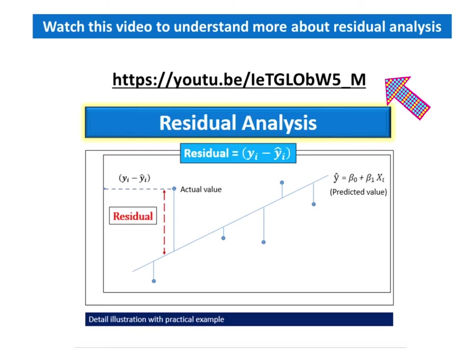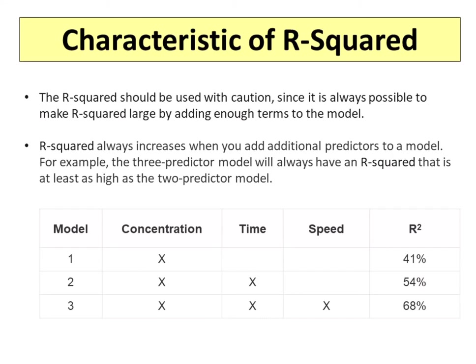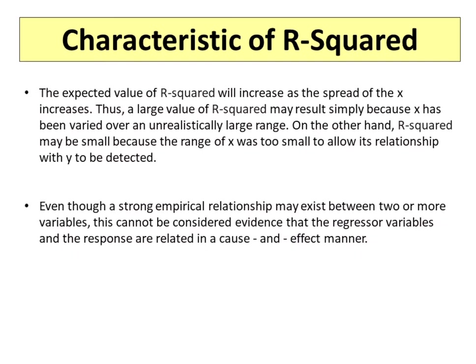Watch my other video to understand more about residual analysis. R-squared should be used with caution, since it is always possible to make R-squared large by adding enough terms to the model. R-squared always increases when you add additional predictors to a model. For example, a three-predictor model will always have an R-squared at least as high as the two-predictor model. The expected value of R-squared will increase as the spread of X increases. A large value of R-squared may result simply because X has been varied over an unrealistically large range. On the other hand, R-squared may be small because the range of X was too small to allow its relationship with Y to be detected.